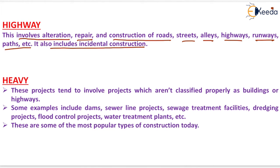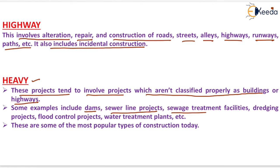The next one is heavy project. These projects tend to involve projects which are not classified properly as building or highways. Some examples include dams, sewer line projects, sewage treatment facilities, bridging projects, flood control projects, water treatment plants, etc. These are some of the most popular types of construction projects today. That is all about the types of construction projects.